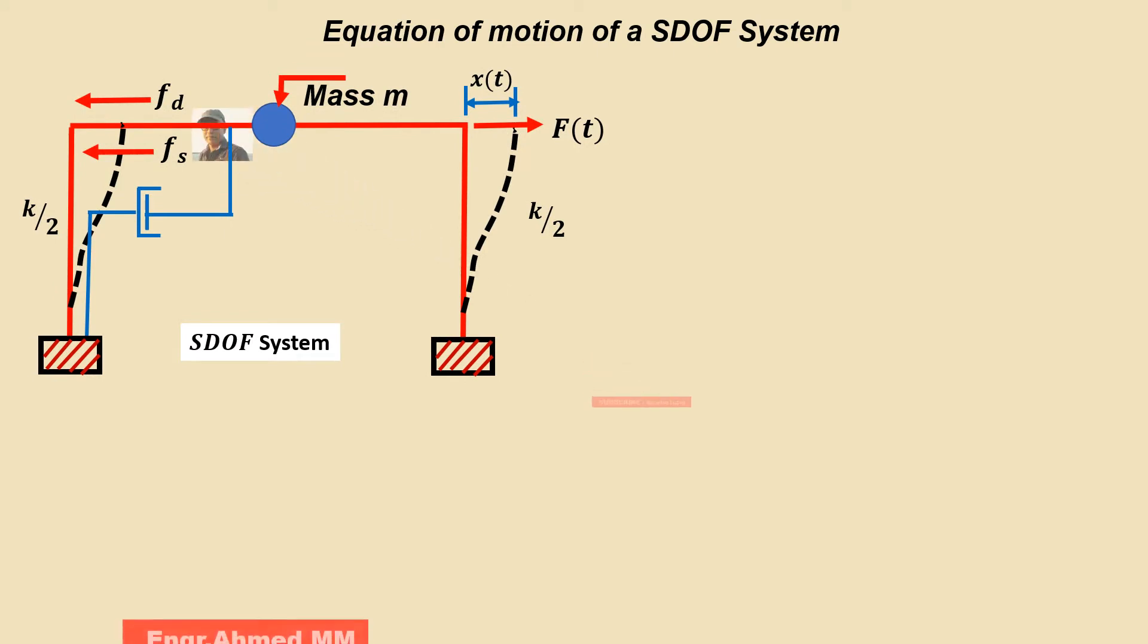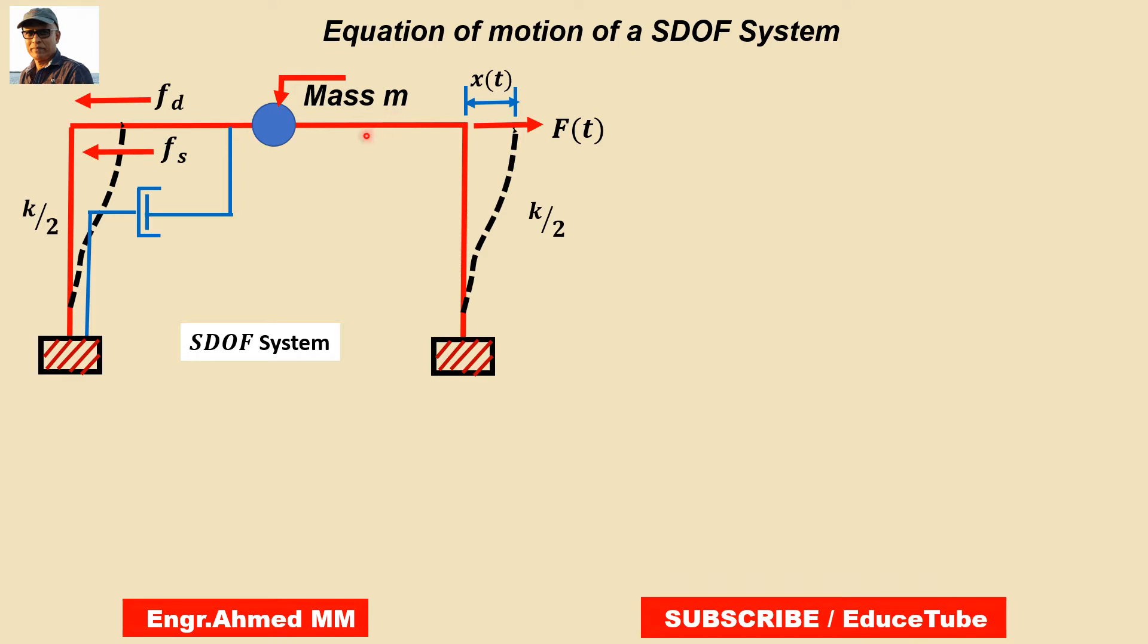As I said, the entire mass of this slab is assumed as being a discrete lump concentrated at the roof level. We can see it here. Half of the column mass, I mean the top part, is considered as being lumped at the roof level, and the balanced half at foundation level.